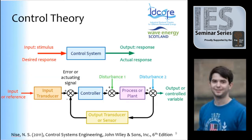In control theory — just a very quick summary — you have an input and you're trying to match it with a control system. To do that you need to know the error signal, so this is the feedback loop. The aim is to match the output to the input, but at the same time you will get disturbances along the way.